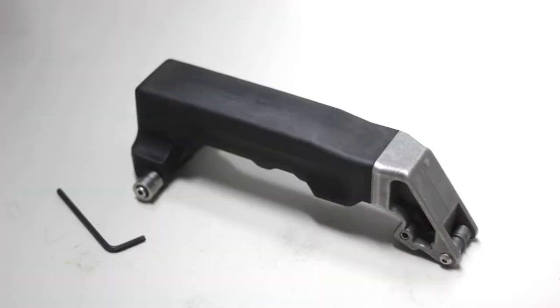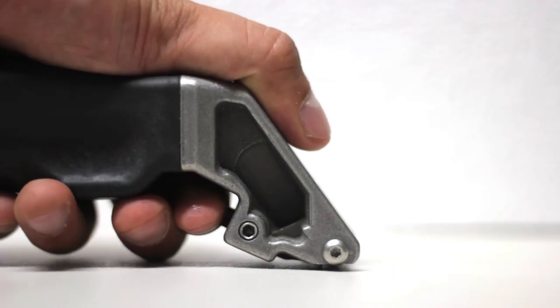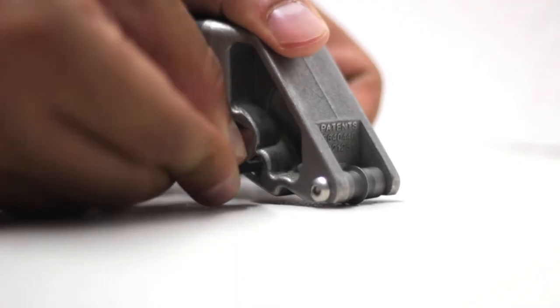To adjust, simply place the groover on a flat surface, loosen the blade with the allen wrench included, push the blade down until it touches the ground and tighten.